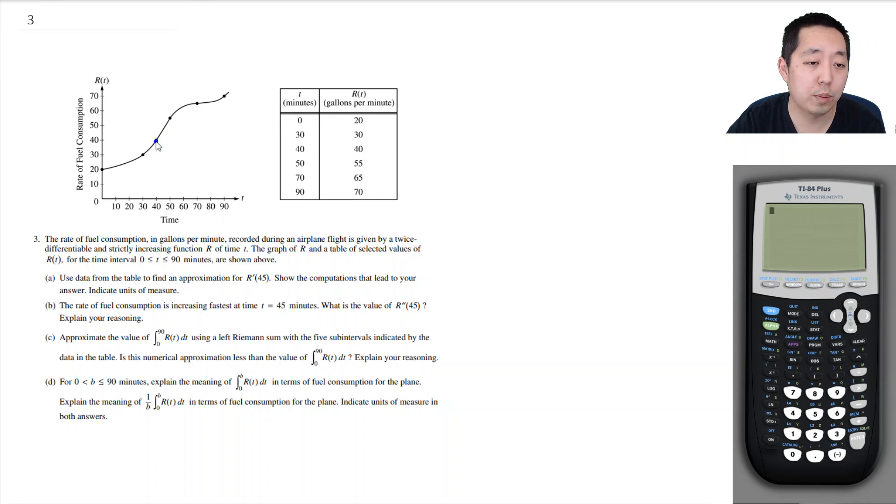To do this slope approximation, I'm going to use a secant line slope because I have data points at 40 and 50 and those surround. So I'm going to do R of 50 minus R of 40 divided by 50 minus 40. So R of 50 was 55 minus 40 over 10. So that's 15 over 10, 1.5.